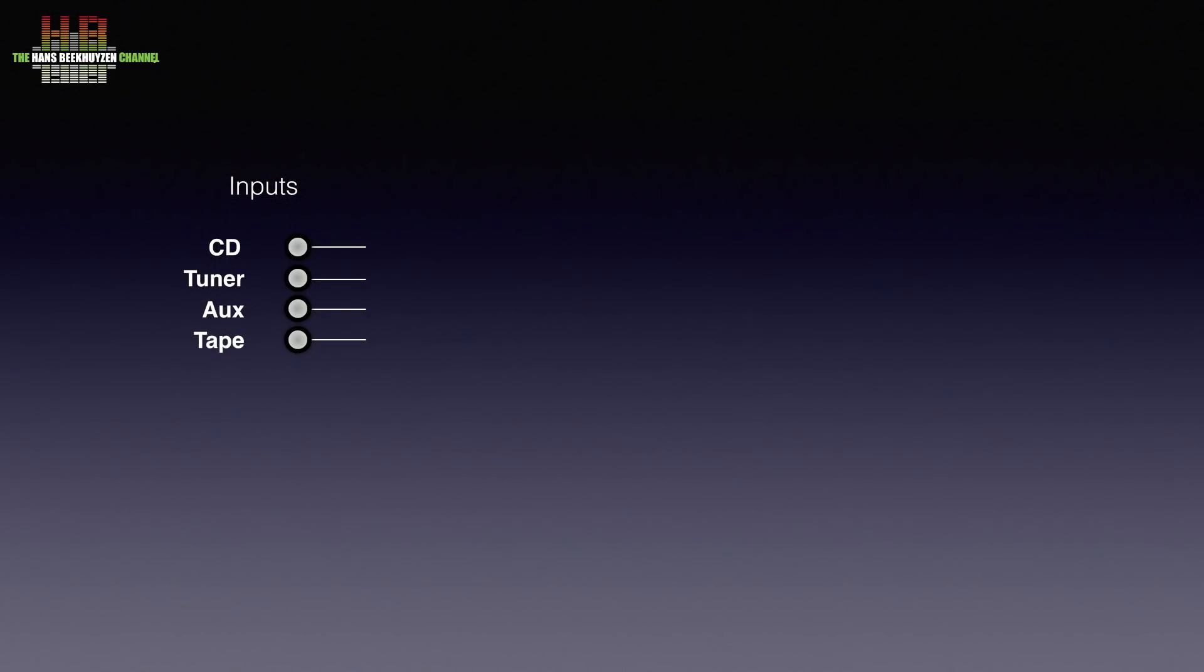Let's look at an imaginary amplifier by function blocks and start with the inputs, in this case four. Those are connected to an input selector that lets you choose one of the inputs. Then follows a first amplifier stage, a so-called potentiometer, aka volume control, and a second amplifier stage that feeds the power amplifier.